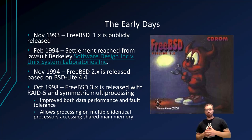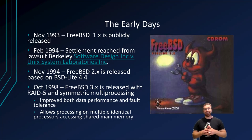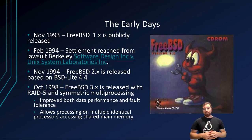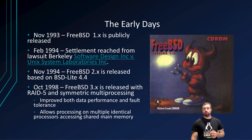The key takeaway of the settlement was that 4.4 BSD Lite would be released with no proprietary files. This resulted in a 1994 release of 4.4 BSD Lite, and then a year later in 1995 a release of 4.4 BSD Lite 2, which FreeBSD 2 was eventually merged into. From here, we're going to be taking a look at the major versions of FreeBSD and the most notable benefits.